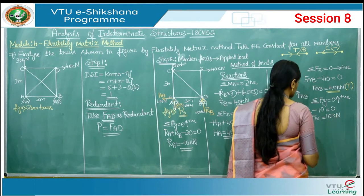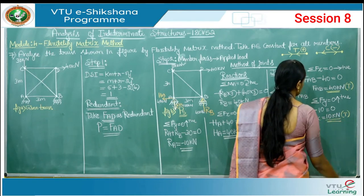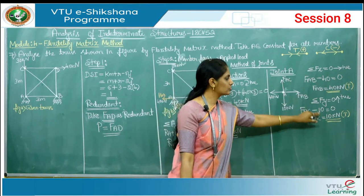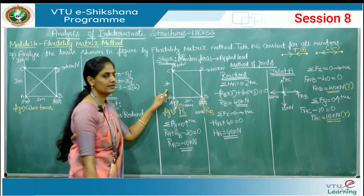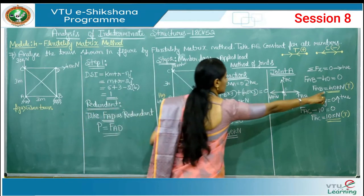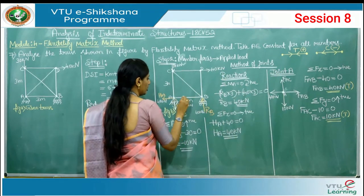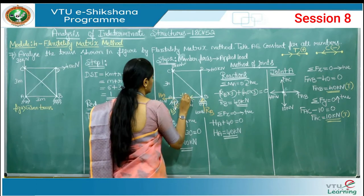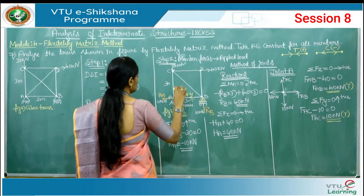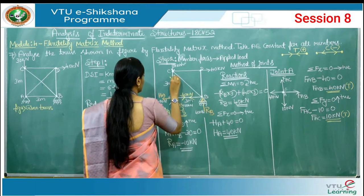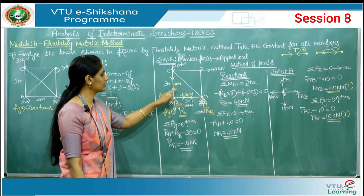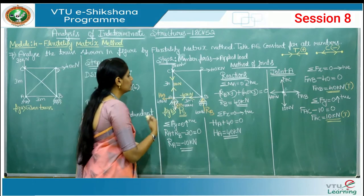Both F_AB and F_AC are positive, confirming tensile forces. Immediately mark these on the truss: F_AB equals 40 kN tension (away from joint), F_AC equals 10 kN tension (away from joint). After analyzing each joint, mark the values on the truss diagram before proceeding to the next joint.